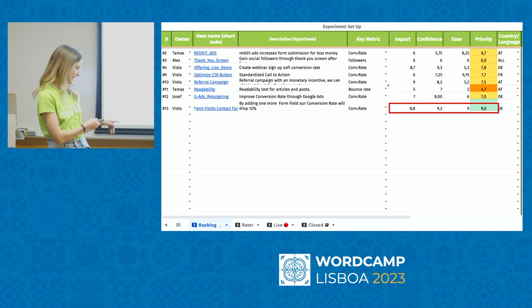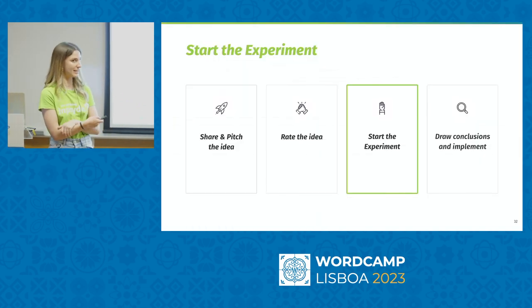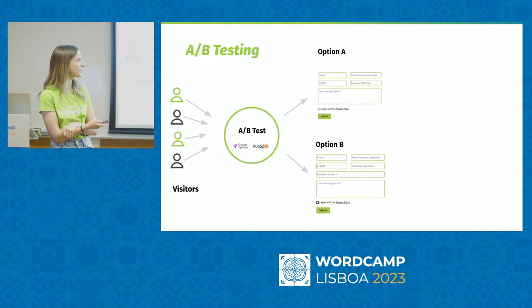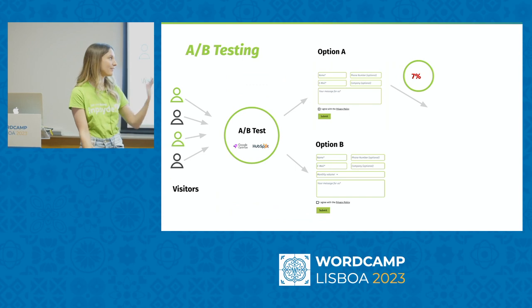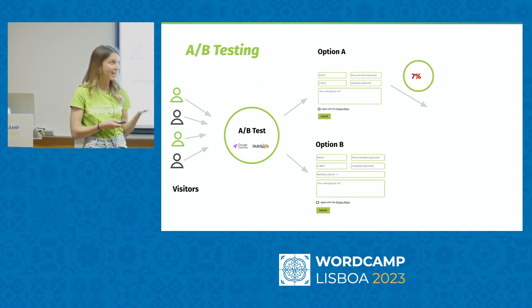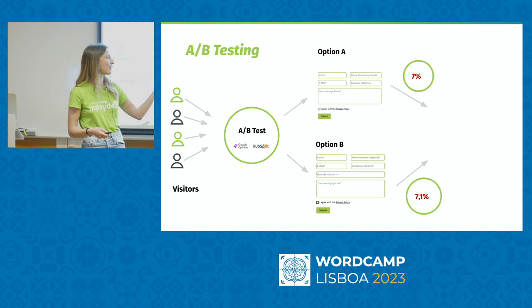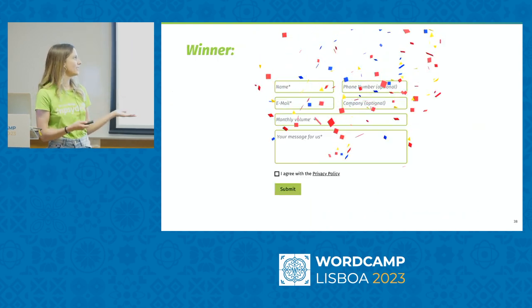The overall score came out to 9.0 — the highest I'd ever had in my testing experience — so we put this into action and started the experiment. During the test period, we ran A/B testing using tools like Google Optimize and HubSpot. Version A had a 7% conversion rate; we expected version B to drop to around 6.1%. Against our expectations, version B came in at 7.1% — so option B with the extra form field was actually the winner.